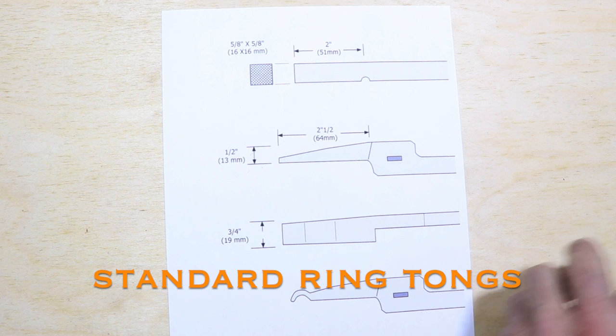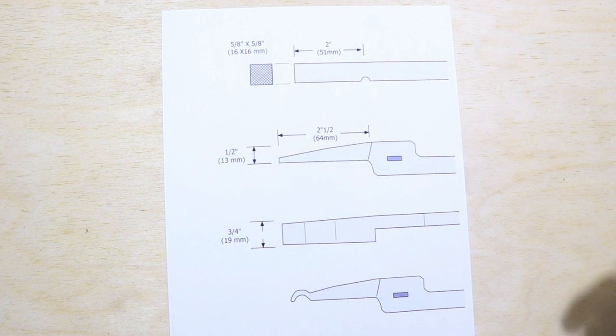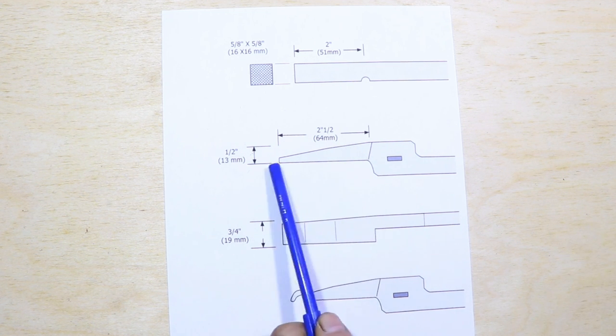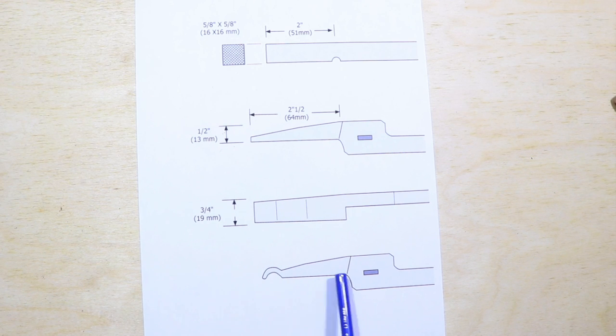Ring tongs are used to hold bar stock across the face of the jaws. So here again you can see how they're just a standard pair of flat bit tongs with the ends of the jaws altered to fit whatever bar stock you're working with.